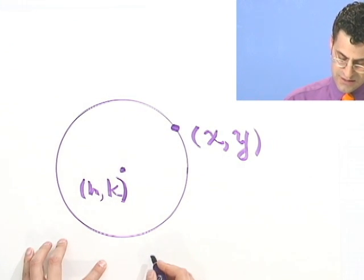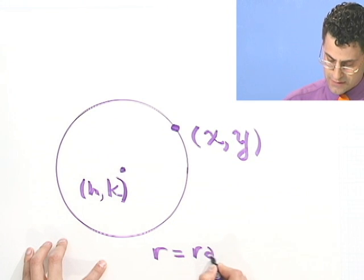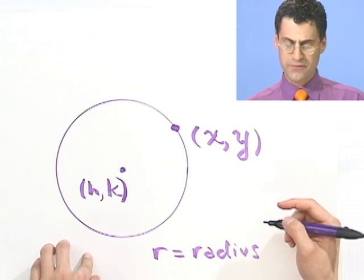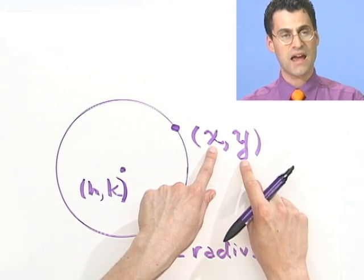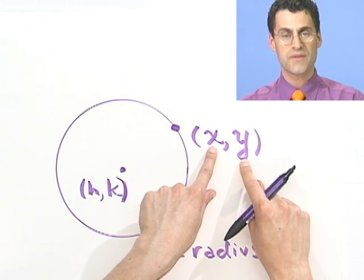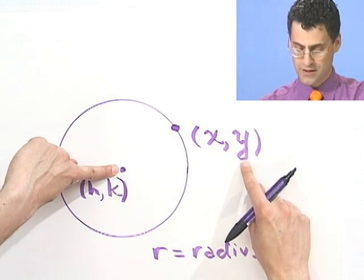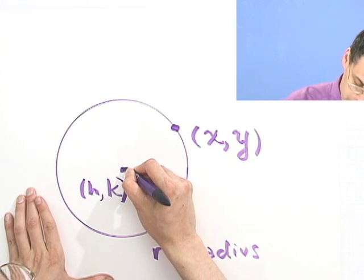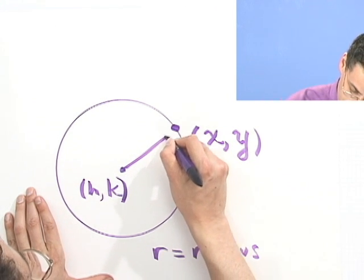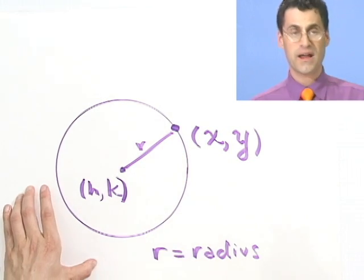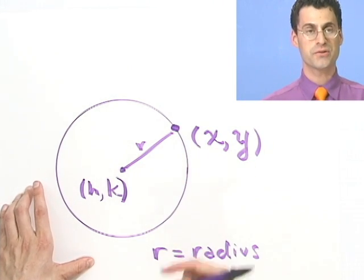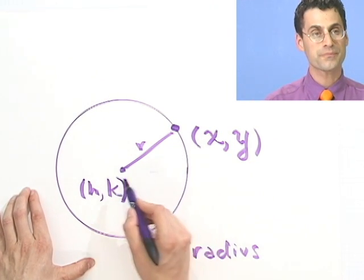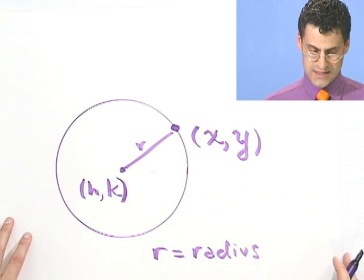Let's call that R. So let's let R equal the radius. Well then, can we find a fact about this X and Y just knowing that its distance away from this particular fixed center is equal to the radius? Well, the answer is yes. It's the distance formula. So if I connect these two things, I know that length is R, but I can also compute the distance between those two things using the distance formula.